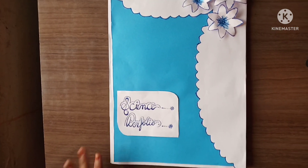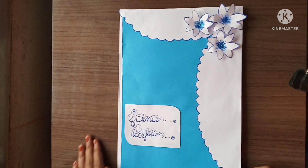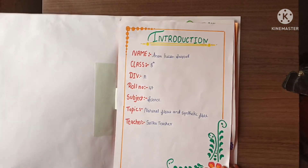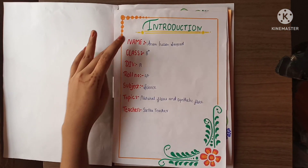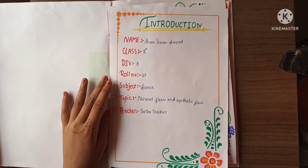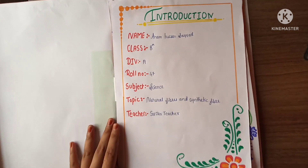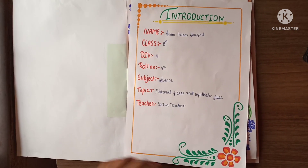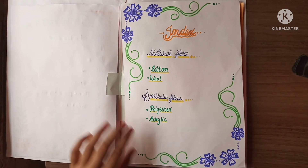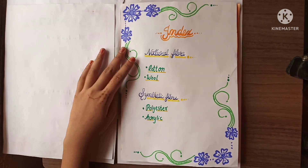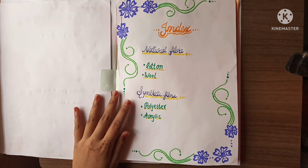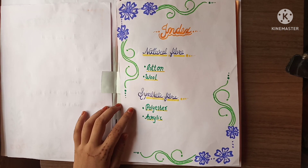Now let's see what's inside. First of all we will get an introduction page with name, class, division, roll number, subject, topic, and teacher. The second page is the index: natural fiber — cotton, wool; and synthetic fiber — polyester, acrylic.